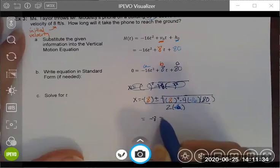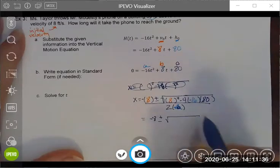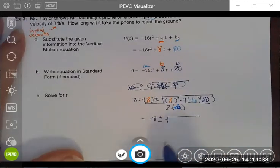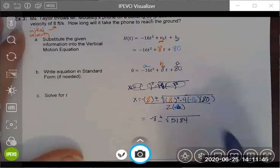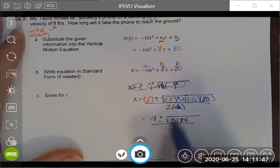And my discriminant turns out to be 5,184, which is a big number, all of which is being divided by negative 32.